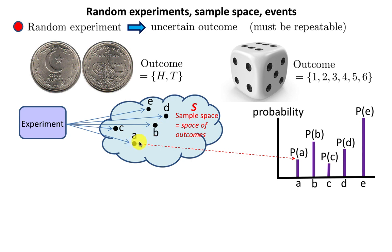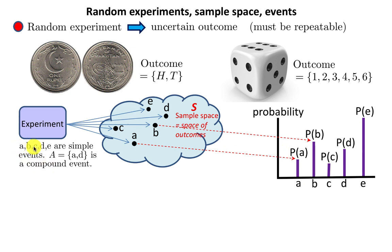Now, A, B, C, D, E are simple events. For example, A could be the event that there is a 4 on the outcome of rolling a die. On the other hand, there can be what are called compound events — capital A could be event A as well as event D happening. The sample space S contains all possible outcomes, so anything outside of this sample space will have probability 0; it cannot happen.